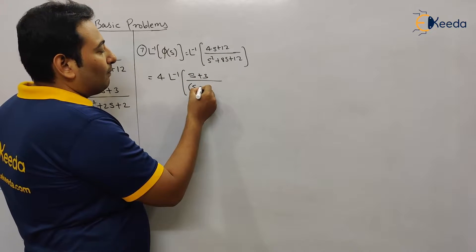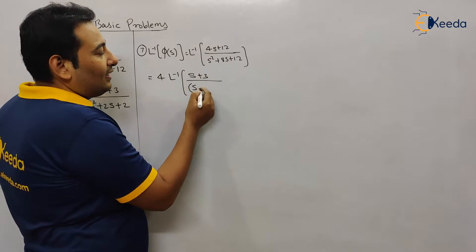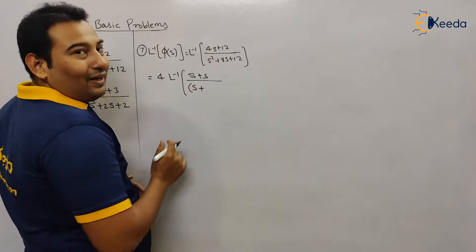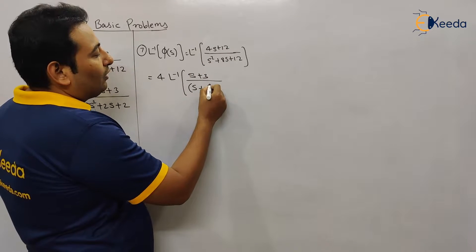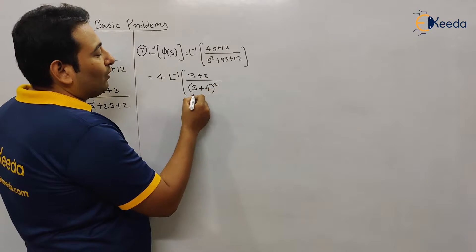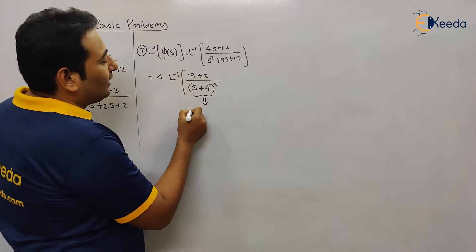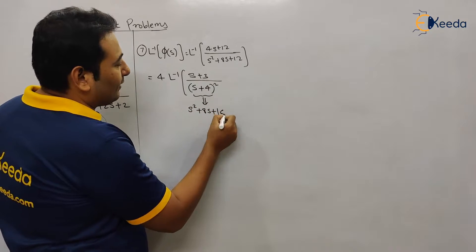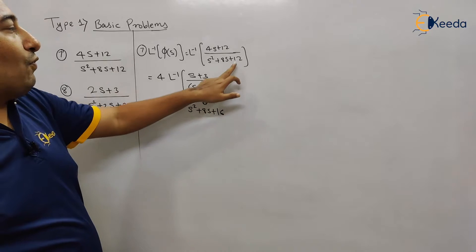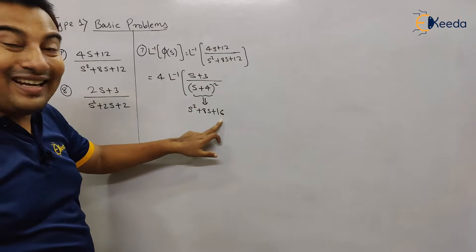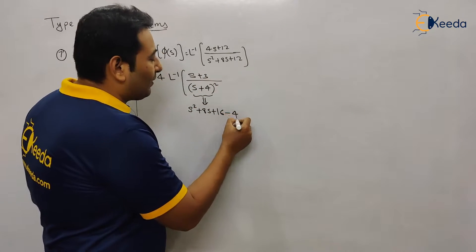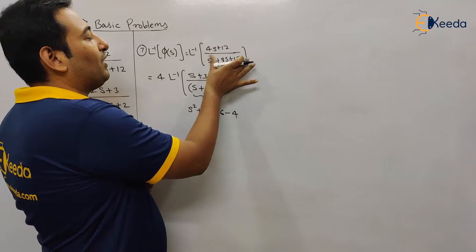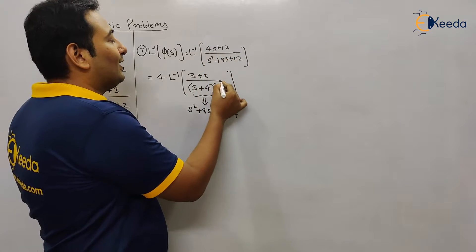The perfect square form is: inside the square root, with the sign in between, plus half of eight — that is four — the whole square. Now if you expand this you get s squared plus 8s plus 16, but here we want 12 and we are getting 16, therefore we need to subtract four from it so that this expression will be equivalent.